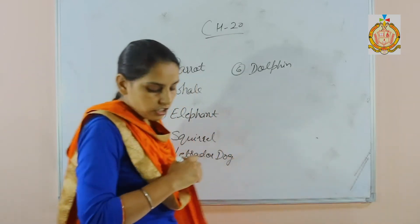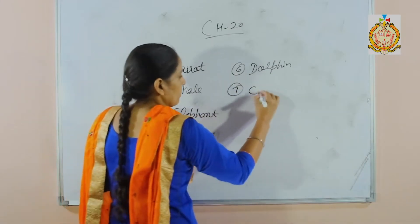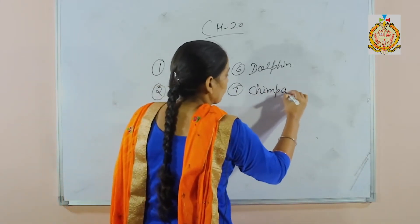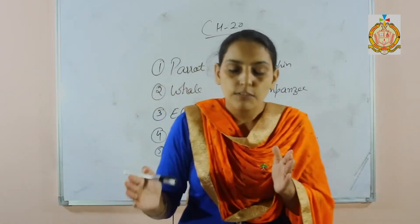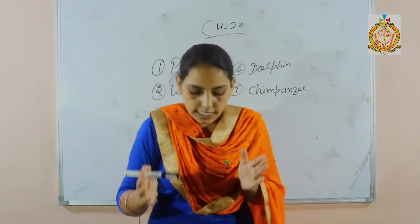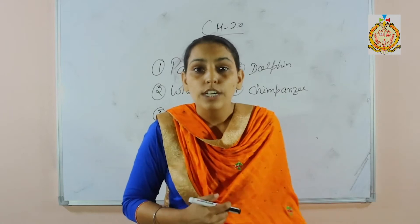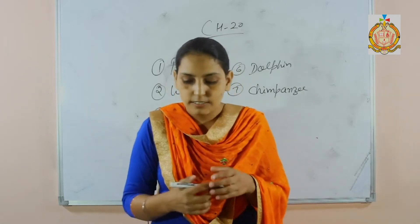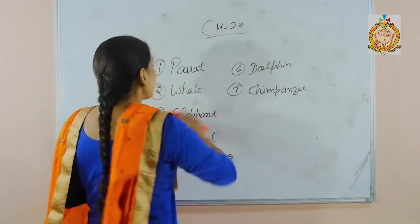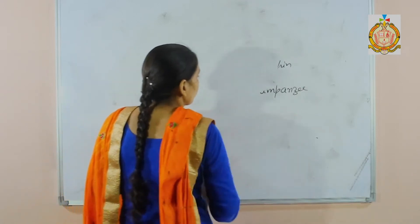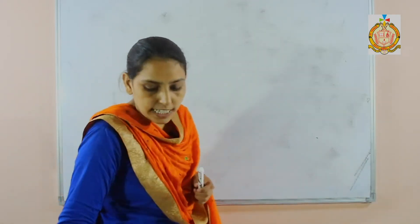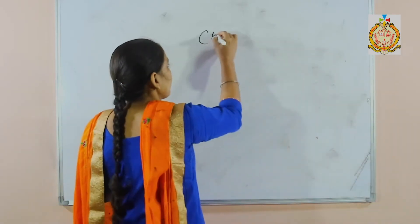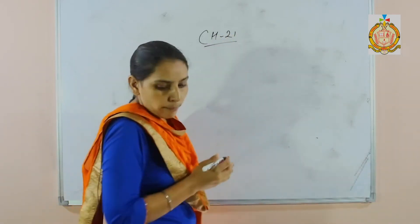Next one is the chimpanzee. It can manipulate its environment like humans and can use tools to complete certain tasks. Our next chapter is chapter 21: Branches of Medicine.